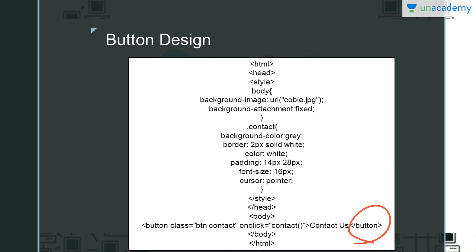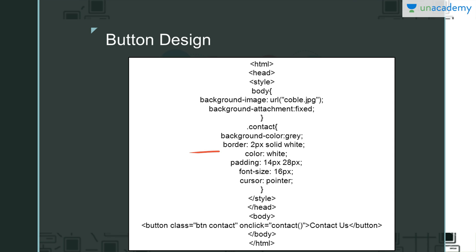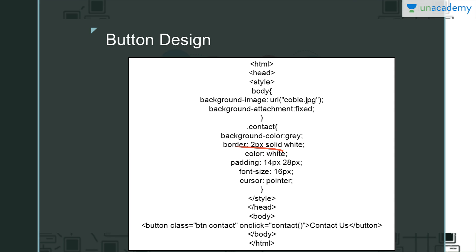Moving to the designing part: whenever you design a button or anything — for example if you have created a paragraph and assigned an ID to it — you use dot then the class or ID name. Here the name was 'contact', so you write dot-contact and then start your designing. First is background-color, which will be the background color of the button. A simple button is usually in a shade of gray. Then border — this adds a border to the button, with 'solid' as the style. The 2px defines the width of the border.